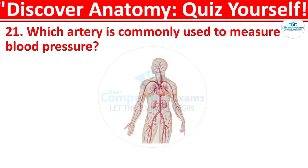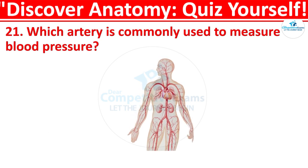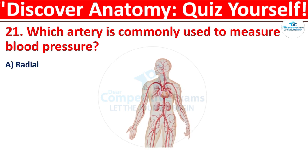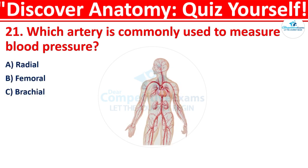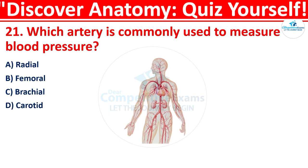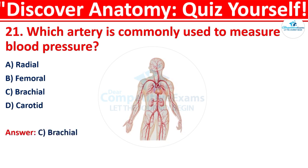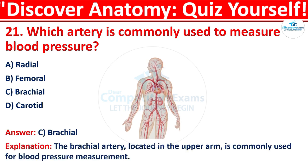Question 21: Which artery is commonly used to measure blood pressure? The options are: radial, femoral, brachial, or carotid. The correct answer is C, that is brachial. The brachial artery, located in the upper arm, is commonly used for blood pressure measurement.